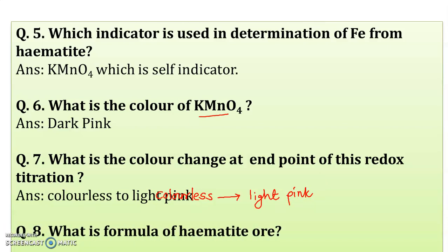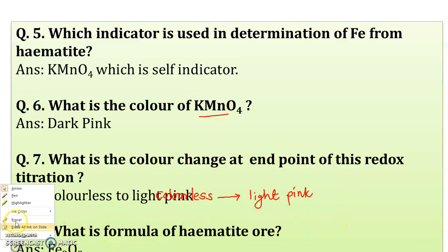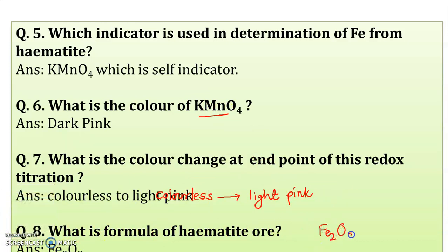What is the formula of hematite ore? The formula of hematite is Fe₂O₃. This is the formula of hematite ore.